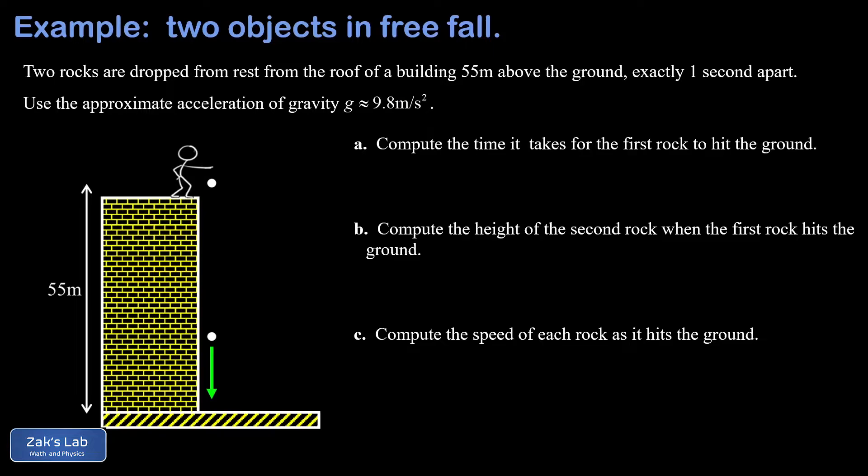We're asked three different questions. In part a, we want the time it takes for the first rock to hit the ground. We write down the equation for the y coordinate as a function of time in vertical free fall. That's the same as our first kinematics equation for constant acceleration: y = y₀ + v₀y·t + ½at². We already substituted in that the acceleration is negative g.